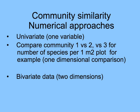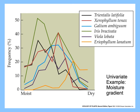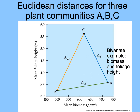There are a number of numerical approaches: those that have one variable comparing one community versus another for the number of species per one square meter plot, for example — this is a one-dimensional comparison. And then there are data analyses that look at two dimensions, bivariate data. An example of univariate comparisons would be looking at how species vary along a moisture gradient. In a bivariate example, we might look at two variables like total biomass and foliage height, plotting mean biomass on the x-axis against mean foliage height on the y-axis.